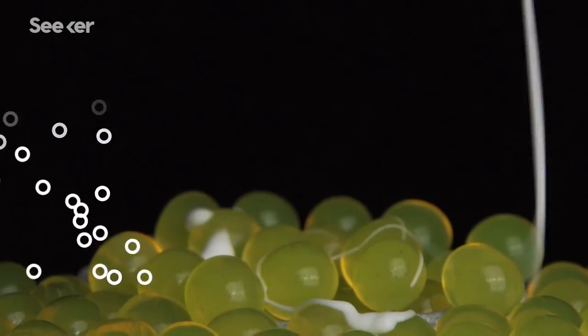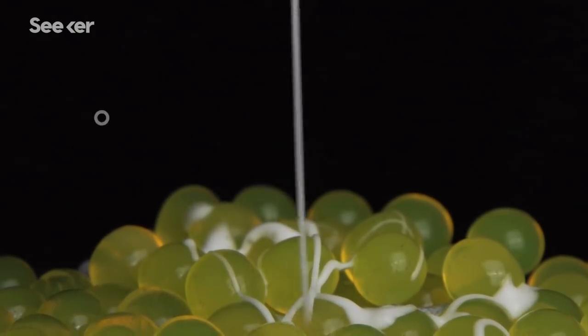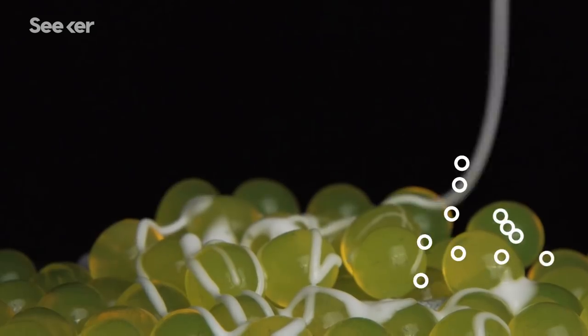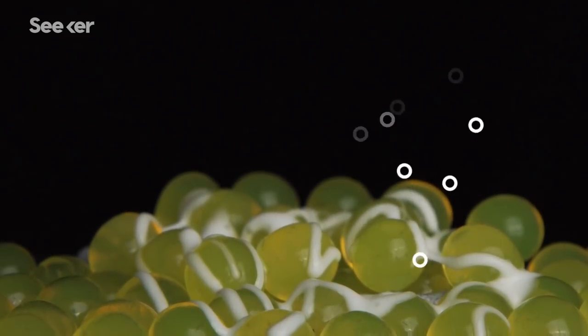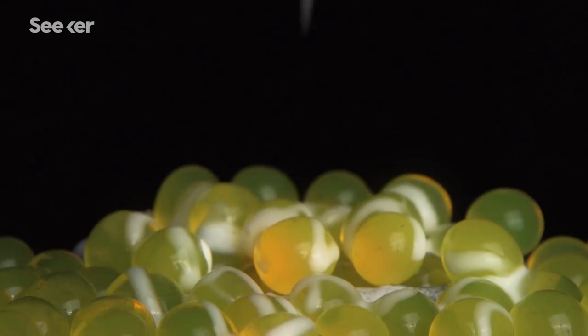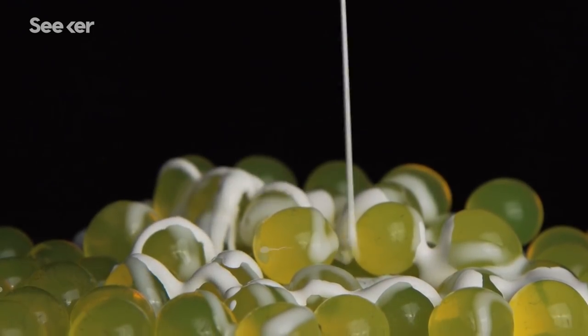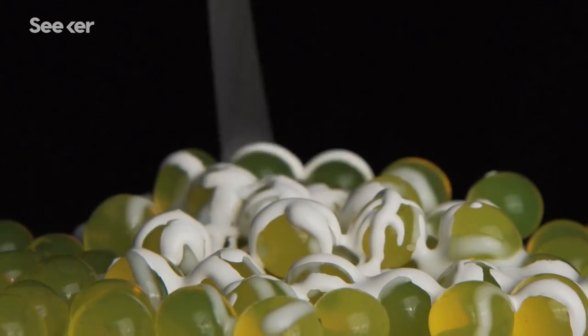Ejaculates of territorial versus sneaker males vary greatly in their composition. Territorial males create a viscous, abundant spew that is high in substances that help the sperm to swim faster through the seawater to the eggs.